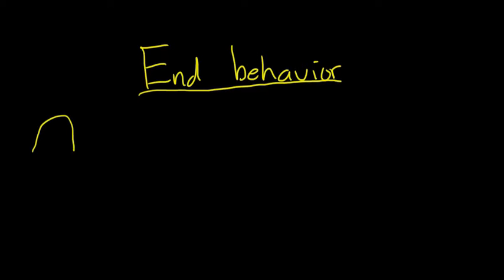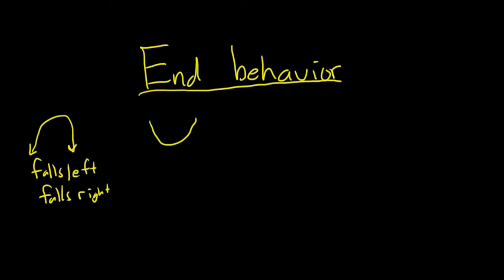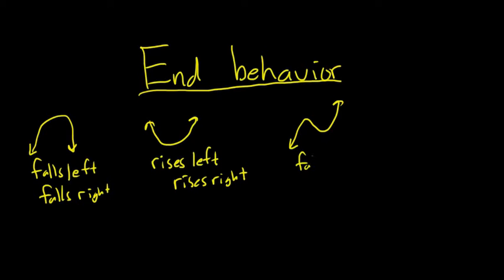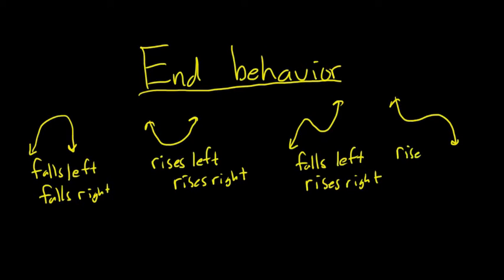For example, if you have a function that does this, you would say it falls left and falls right. If you had a function that did this, you would say it rises left and rises right. And you could have something like this — falls left and rises right. Or the last case: rises left and falls right.